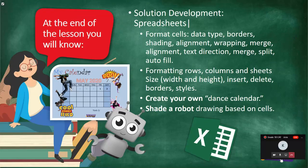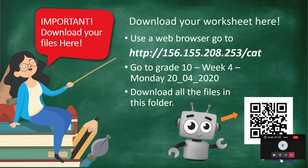You can put the calendar on your fridge or print it out for your room, which is quite cool. For homework, I'm going to let you guys shade in a robot based on cells — you'll need your times tables for that one. Make sure you know some of your timetables. Please shout out questions towards the end of the lesson.